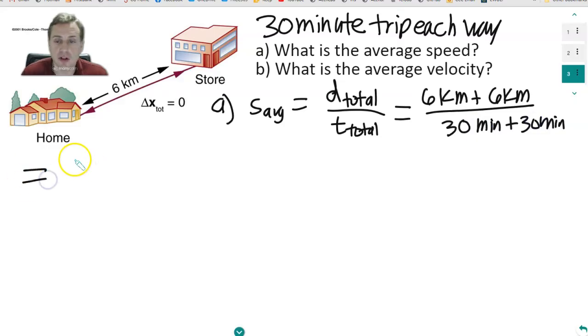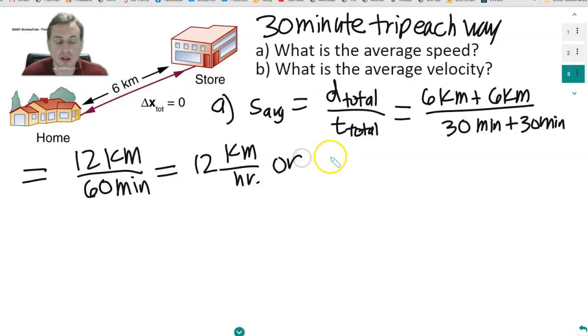So that's going to be 12 kilometers for every 60 minutes. But we know 60 minutes is 1 hour, so we can either write this as 12 kilometers per hour, or we could do this as, let's see, 12 divided by 60 is going to be, has a common factor of 6.